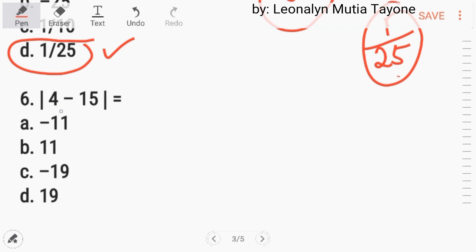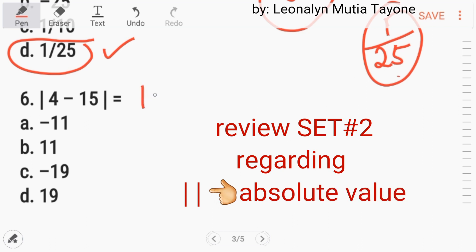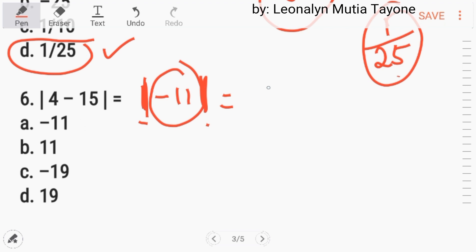Number 6. 4 minus 15. 4 minus 15 is negative 11. Tapos, itong bar na ito, the vertical bars on either side of the expression tell you to find the absolute value of this number. So, the answer is positive 11. Letter B.